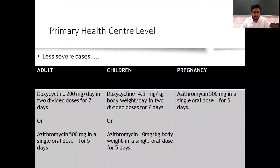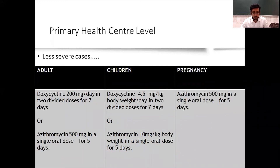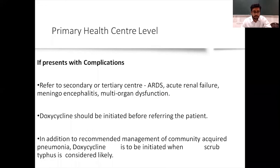At the PHC level for less severe cases: doxycycline 200 mg in two divided doses (100 mg twice daily) for seven days, or azithromycin 500 mg once daily for five days. For children: doxycycline 4.5 mg per kg body weight in two divided doses for seven days, or azithromycin 10 mg per kg body weight as a single dose for five days. For pregnant individuals: doxycycline is contraindicated, so azithromycin 500 mg as a single oral dose for five days is used.